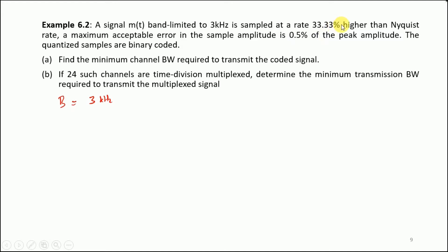It says that it is sampled at a rate 33.33% higher than the Nyquist rate. Let us look into the Nyquist rate first. The Nyquist rate Rn is simply 2 times B, and this would be 6 kilohertz.